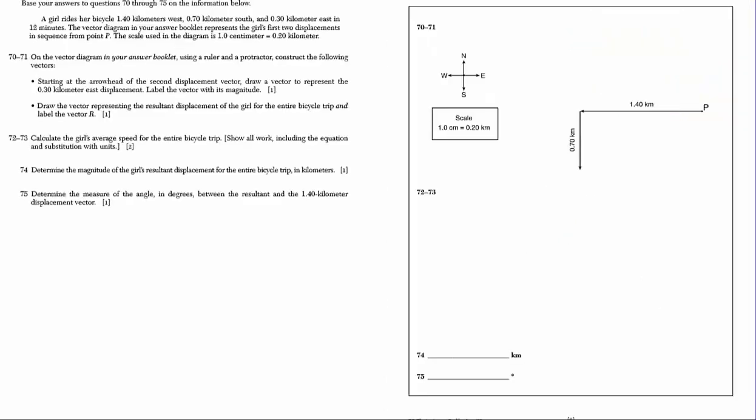I'm going to scoot ahead to number 70 now. In number 70, we have a girl riding her bicycle 1.4 kilometers west, then 0.7 south, and then 0.3 east in 12 minutes. We've got the vector diagram in our book. And, we know the scale is 1 centimeter is 0.2 kilometers. In the vector diagram, we're going to use a ruler and a protractor. And, we need to construct the following vectors. They want us, and it's very clear, we need to start at the arrowhead of the second displacement vector. We need to draw a vector to represent 0.3 kilometers east displacement. Let's make sure we understand what's happening.